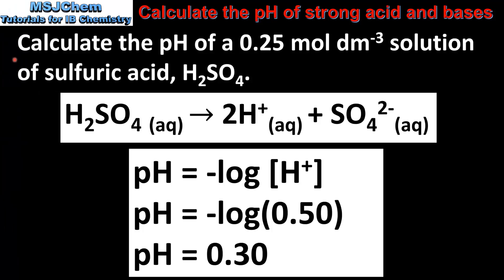Our last example is to calculate the pH of a 0.25 mol dm⁻³ solution of sulfuric acid. As mentioned, sulfuric acid is a diprotic acid, so when 1 mole of sulfuric acid dissociates it produces 2 moles of hydrogen ions. To calculate the hydrogen ion concentration we multiply the concentration of the sulfuric acid by 2, giving 0.50 mol dm⁻³.